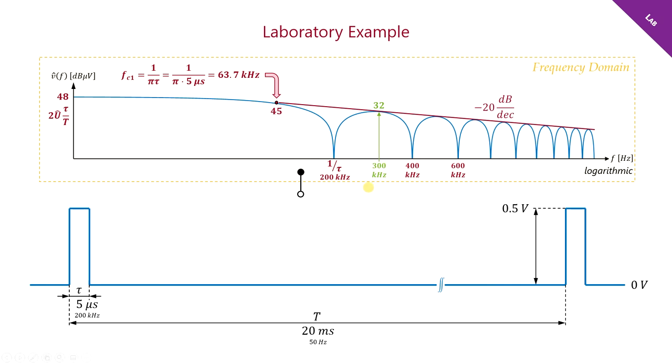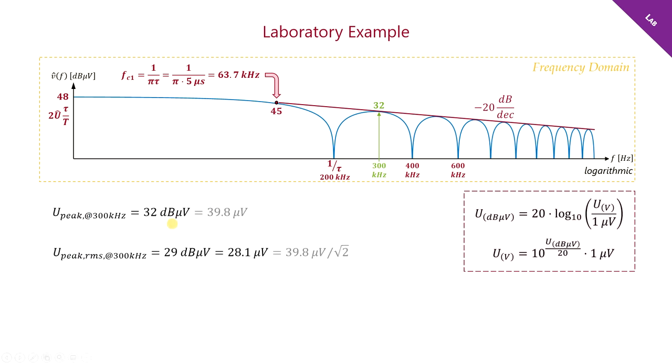For instance, the spectral component at 300 kHz must be at approximately 32 dBµV. The EMI receiver, however, will show us the RMS value. So, we need to subtract 3 dB.